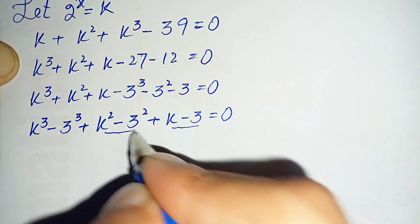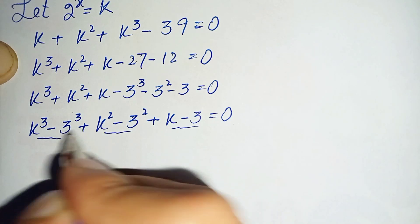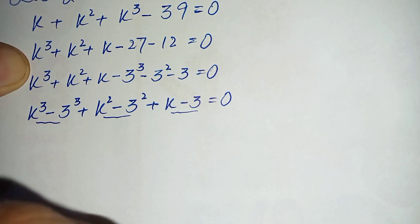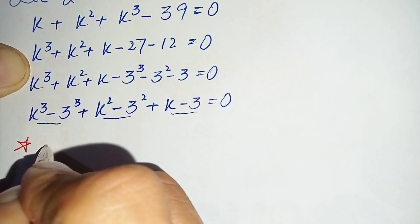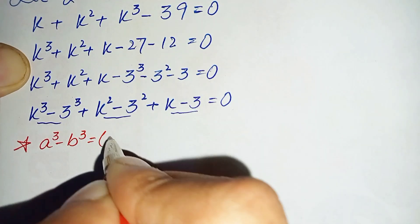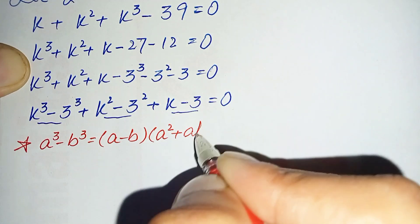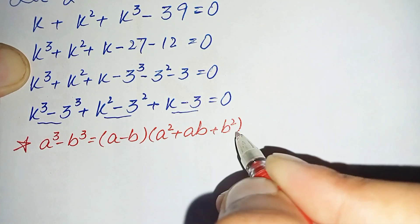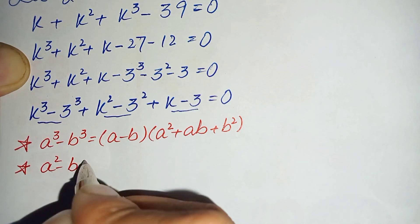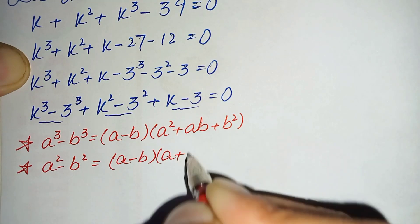So there are three groups: (k minus 3), (k squared minus 3 squared), and (k cubed minus 3 cubed). In these groups we will use two different algebraic identities: A cubed minus B cubed equals (A minus B)(A squared plus AB plus B squared), and A squared minus B squared equals (A minus B)(A plus B).